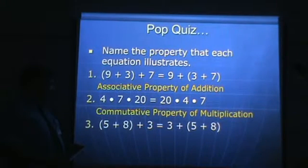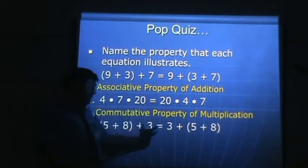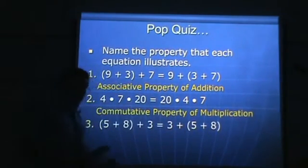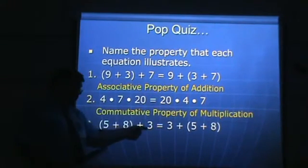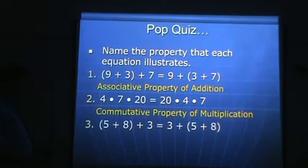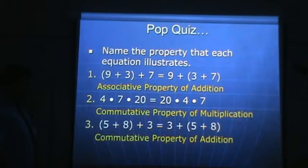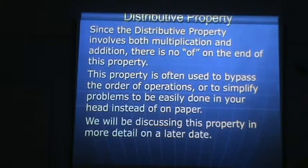This one — be careful. It looks like the grouping changed, but look at what's inside the grouping: 5 plus 8 on both sides. The grouping did not change. What changed was the order of when you're adding the 3 — the 3 was in front here, and here it's at the end. So this is the commutative property of addition. Don't be fooled by moving parentheses — what's inside the parentheses is what makes the difference.